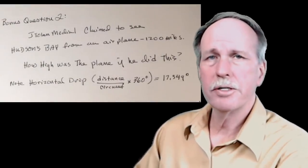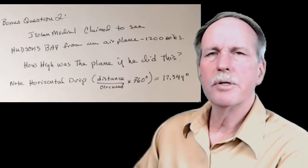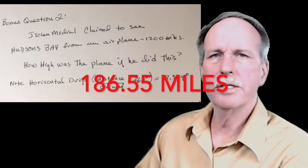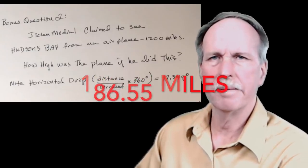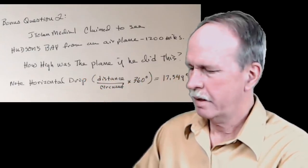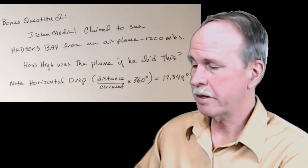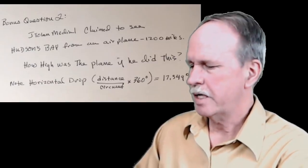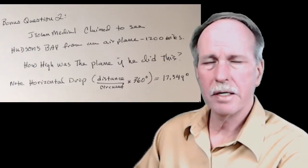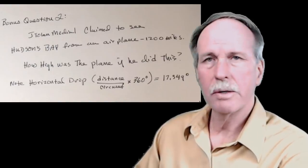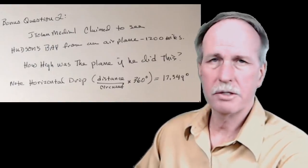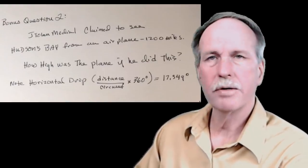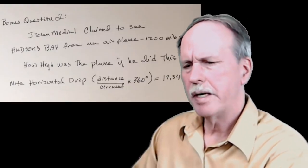And bonus question number two. In a commercial airliner, how high did J. Tolman Media 1 have to be in order to see Hudson Bay 1,200 miles away? Again, our winner is Michael Caracos. He got both of them right, and he got them right first. Sable Eagle used a different method and came pretty close. Diego Carafini also used a different method and came pretty close. As did Art B. and Trevor Austin. So, well done, gentlemen.